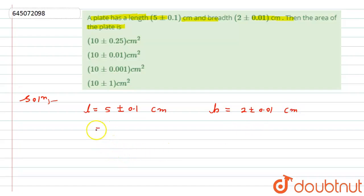We know that the length of the plate is represented by l plus minus delta l, while breadth is given by b plus minus delta b.